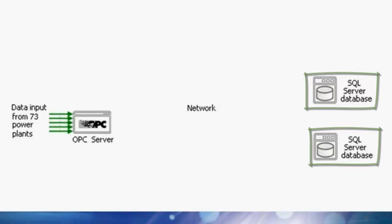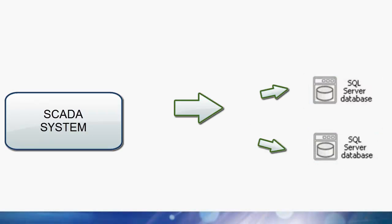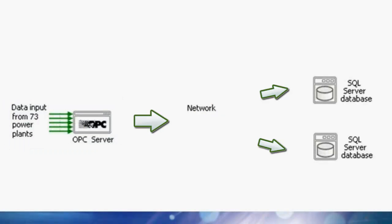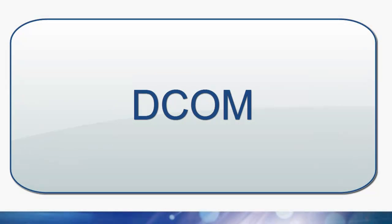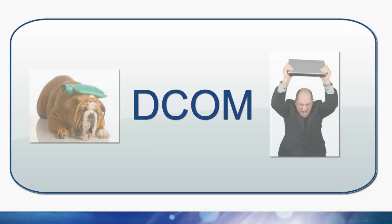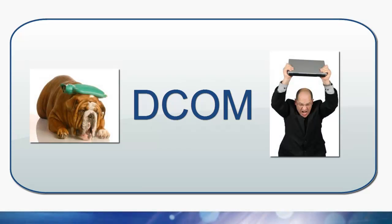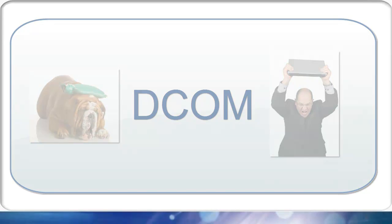At the time they were extracting data from their SCADA system and sending it to two SQL Server databases. But they needed something that was simpler, faster, and more direct. The system design required that the OPC server and two database servers be running on separate machines. They had dealt with DCOM before and didn't want to again, so they wanted to avoid DCOM as much as possible.